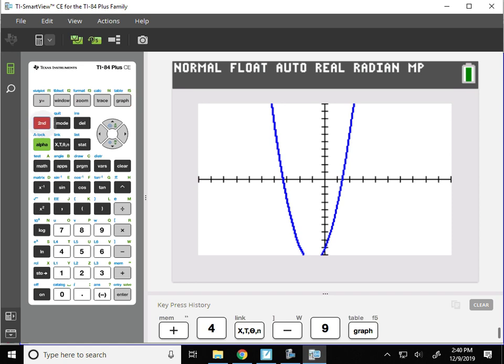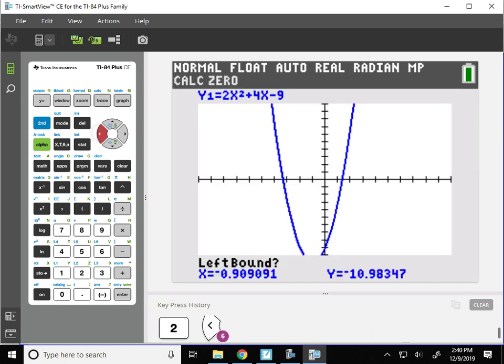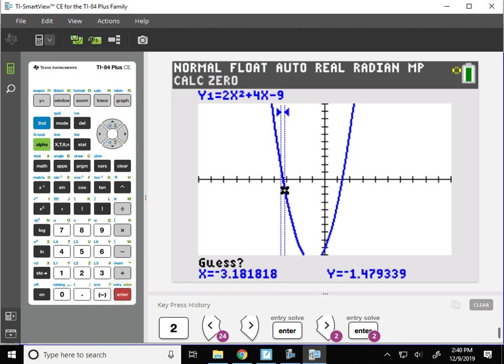Let's trace these roots. Second trace again, number 2. This cursor goes to the left bound. It's a little bit above the axis. We use our arrow to be a little bit below, and hit enter a third time.